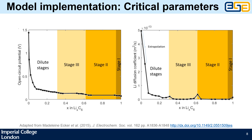The critical parameters are the open circuit potential and lithium diffusion coefficients of the graphite negative electrode. These were measured by Madeleine Ecker et al, who did their measurements on the same cell that we're using, which is very convenient. As you can see, the open circuit potential is flat except at the phase transitions between the different stages of lithiation, and the diffusion coefficient also spikes at those phase boundaries.